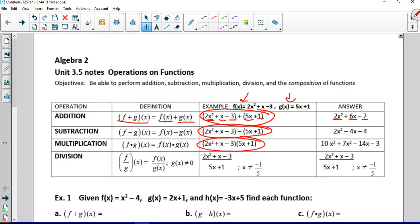I'm joining those two functions together. Subtraction works very much the same way. We're going to distribute the negative, so it's minus 5x and minus 1. The 2x squared comes over, 1x minus 5x is negative 4x, and negative 3 minus 1 is negative 4.